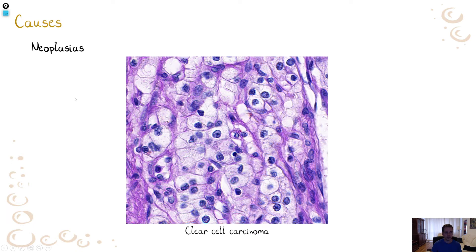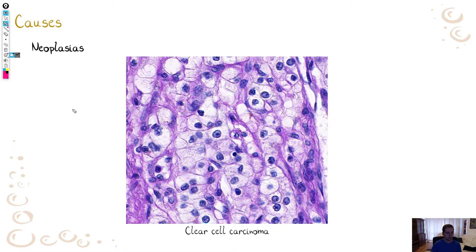Last but not least, please don't forget neoplasias — tumors, especially the malignant ones. The neoplastic cell is a damaged, crippled cell, and malignant cells are, in a sense, dysregulated. Very commonly they store various substances such as protein, fat, or glycogen. A typical example is clear cell carcinoma, which got its name because the neoplastic cells are very pale — almost empty — because the cytoplasm is full of glycogen, which appears pale in light microscopy. The typical localization of clear cell carcinoma is the kidney; it is the most common primary malignancy of the kidney.